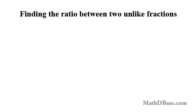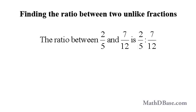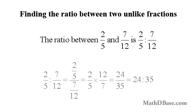If two fractions are unlike, divide the first by the second, or first convert them to equivalent like fractions using the LCD, in which case they will be in the ratio of their numerators. For example, the ratio between 2 over 5 and 7 over 12 is 2/5 to 7/12, which we can rewrite as the complex fraction 2/5 over 7/12. That fraction reduces to 24 over 35, or the ratio 24 to 35.